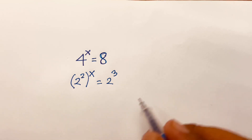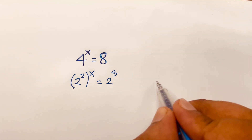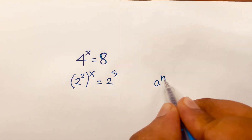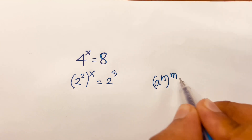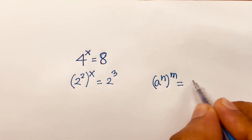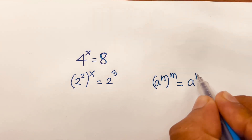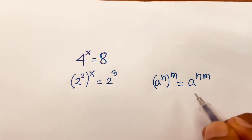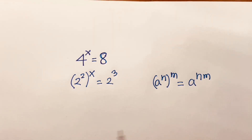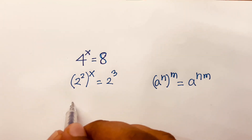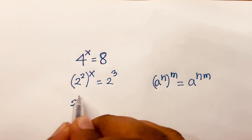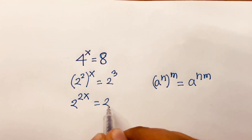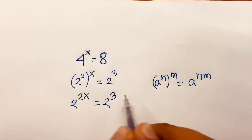According to the exponent rule, a to the power n, bracket power m, is equal to a to the power n times m. If I follow this rule, I can say here 2 to the power 2x is equal to 2 to the power 3.